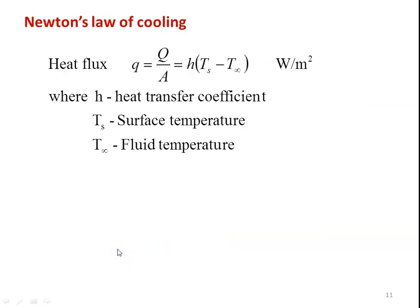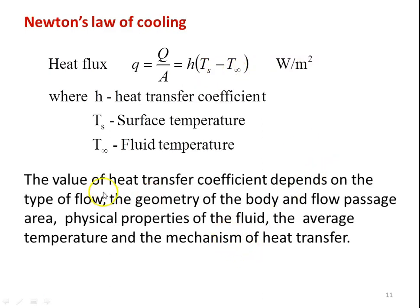Newton's Law of Cooling is the governing equation for convection heat transfer. Heat flux = q/A = h(Ts - T∞), where h is the heat transfer coefficient, Ts is the surface temperature, and T∞ is the fluid temperature. The heat transfer coefficient depends on the type of fluid flow, geometry of the body, flow passage area, physical properties of the fluid, average temperature, and mechanism of heat transfer. There are many parameters influencing the h value — it is very important here, just as thermal conductivity is important in the case of conduction heat transfer.